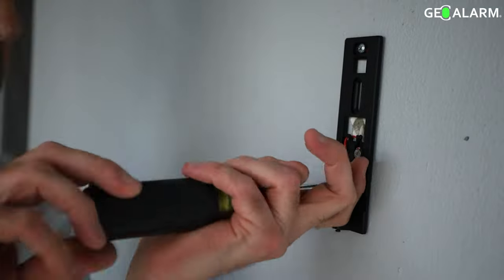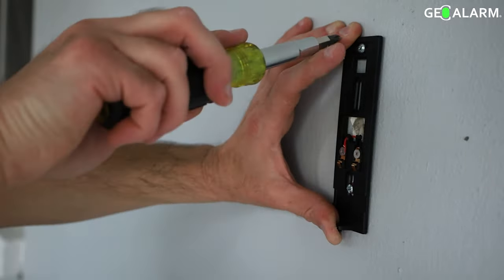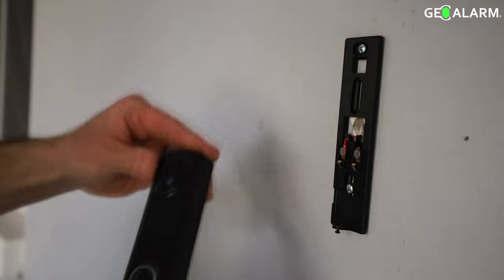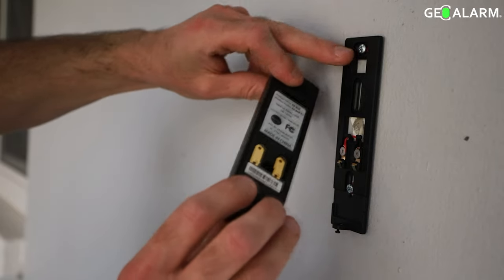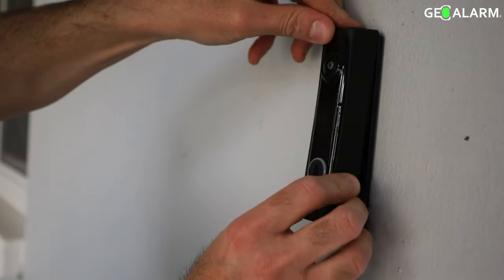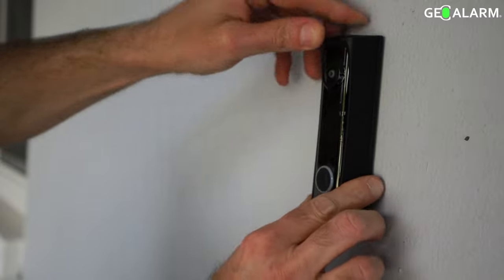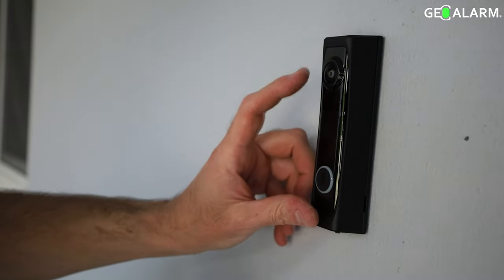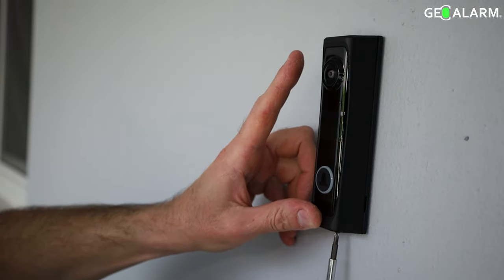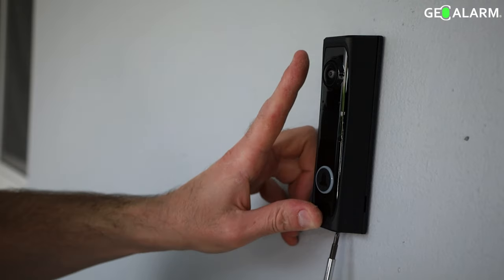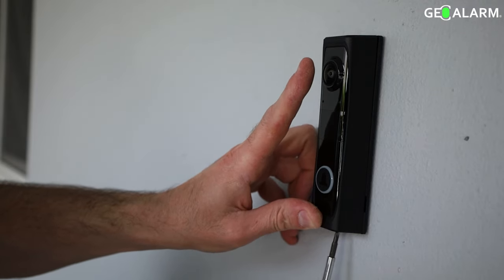As you can see, it's very sturdy when you put it in there. It doesn't move, so it's going to be very secure for weather and things like that. As you can see, he's showing you how to put it in. You start from the top and then you snap it in at the bottom, and then there's a little screw underneath the doorbell camera that you're going to need to tighten down like so.